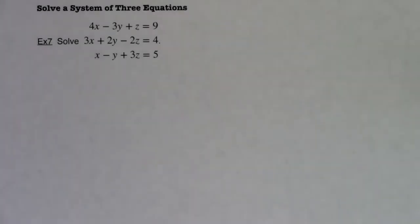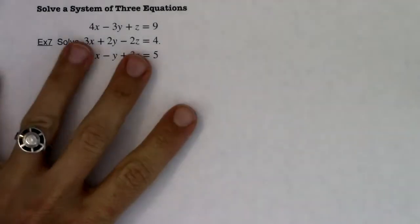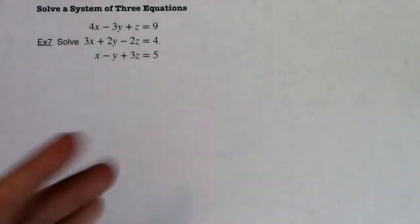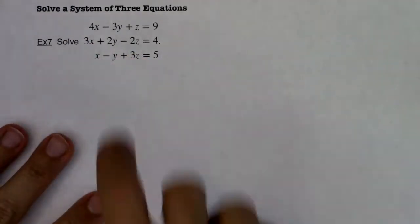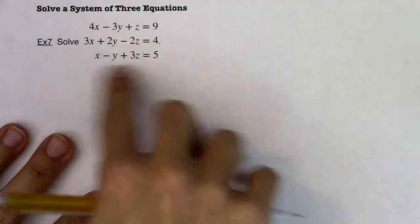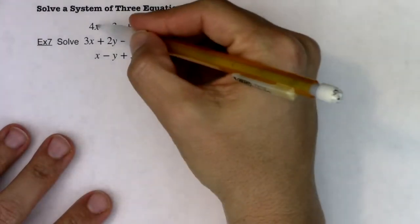Hey, Math 31, welcome to example seven. You can see we are going to solve a system of three equations. So I have three equations and three variables: x, y, and z. So I'm looking at a three by three.